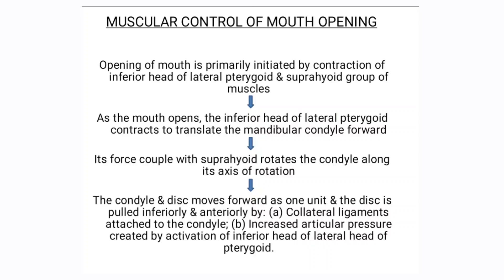The opening of the mouth is primarily initiated by contraction of the inferior head of the lateral pterygoid and the suprahyoid group of muscles. As the mouth opens, the inferior head of the lateral pterygoid contracts to translate the mandibular condyle forward. Its force coupled with the suprahyoid rotates the condyle along its axis of rotation. The condyle and disc move forward as one unit and the disc is pulled inferiorly and anteriorly by the collateral ligaments attached to the condyle. Increased articular pressure is created by activation of the inferior head of the lateral pterygoid.